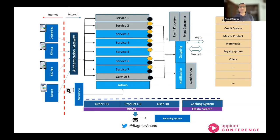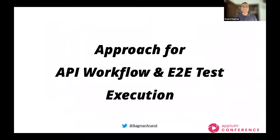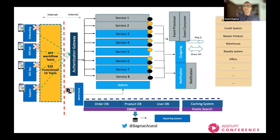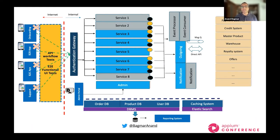I hope you can relate to this type of complexity. In such a system, how do you typically approach doing your API workflow automation or end-to-end test execution? What we typically do is remove the front-end applications and simulate the interactions in the form of end-to-end functional UI tests or API workflow tests. The orchestration of these scenarios mimics or simulates end-user behavior, ensuring the user is able to execute all the different business flows and transactions in a properly integrated fashion.